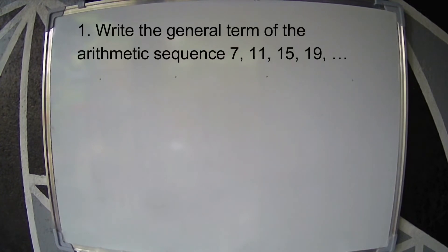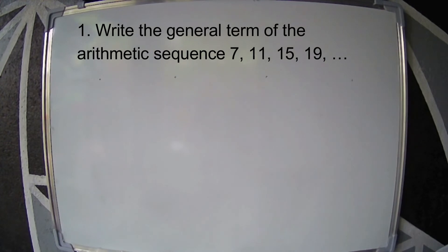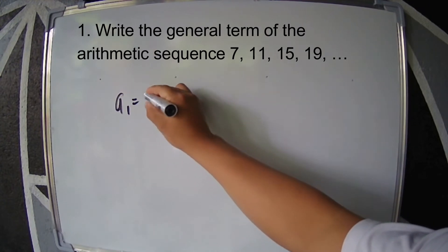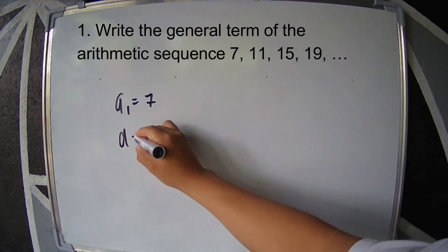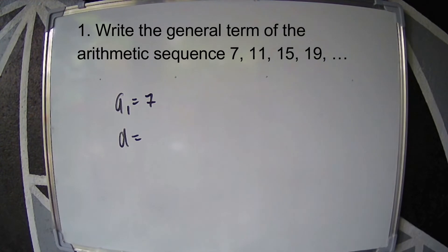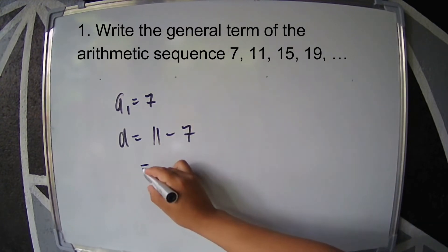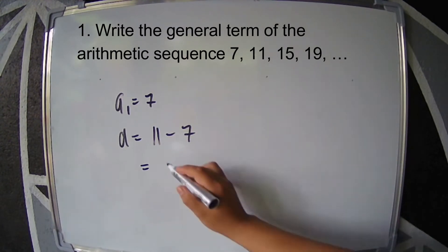Example 1: Write the general term of the arithmetic sequence 7, 11, 15, 19, and so on. First, let us identify the first term and the common difference. The first term is 7. The common difference can be obtained by subtracting the second term by the first term: 11 minus 7. So the common difference is 4.